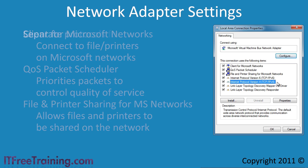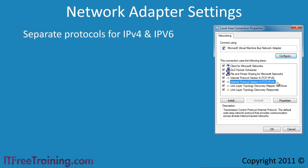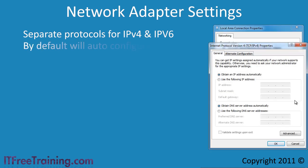Next you have the protocols used on the adapter. The IP version 4 and IP version 6 protocols will always be in here by default. I will look at how to configure the IP version 4 protocol. All you need to do is select it and press the button properties. By default the protocol will attempt to automatically configure itself using DHCP for the IP address and the DNS servers.